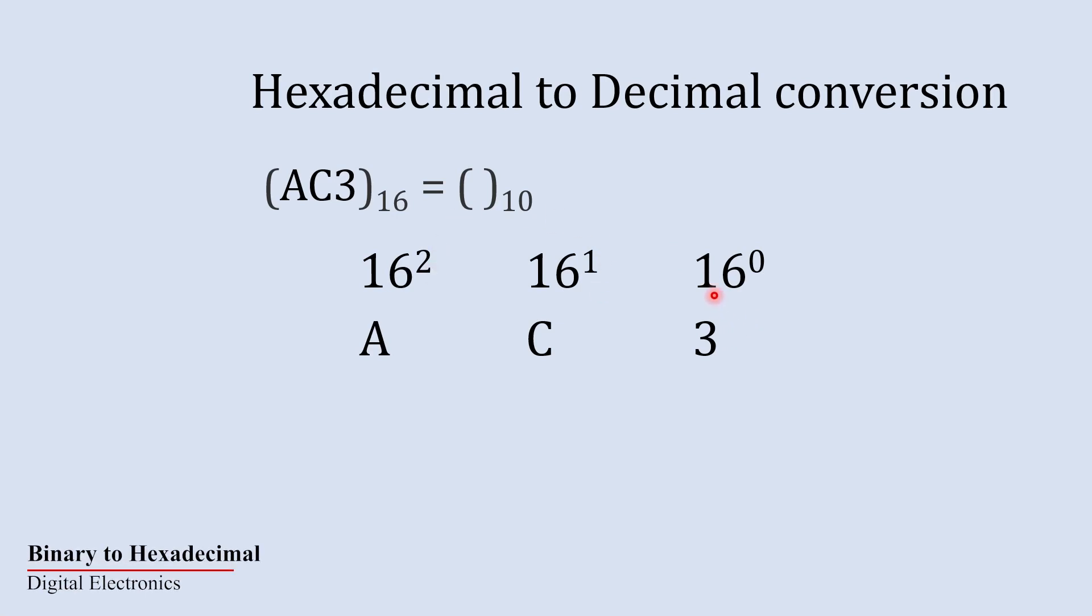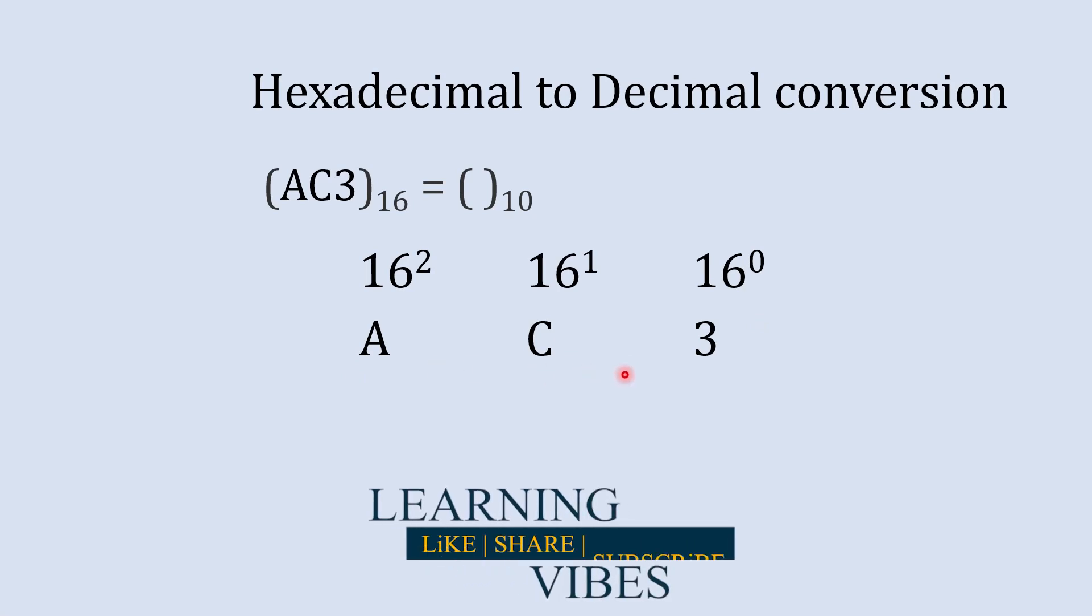Now the question is why we are multiplying 16 to the power something and the simple answer to this question is what is the base of the number which we are going to convert into decimal number? The base of this number is 16 and that is the reason why we are multiplying it with 16 to the power something.